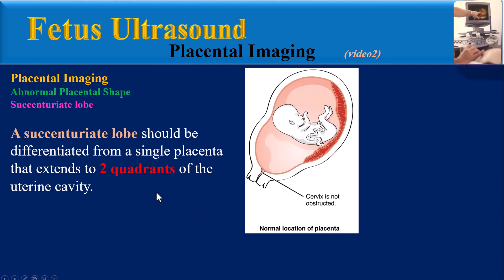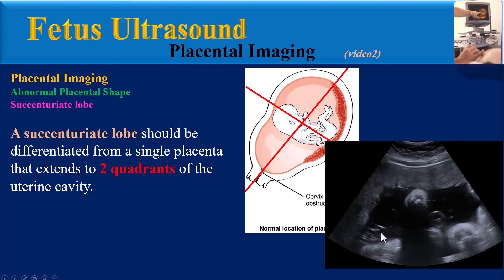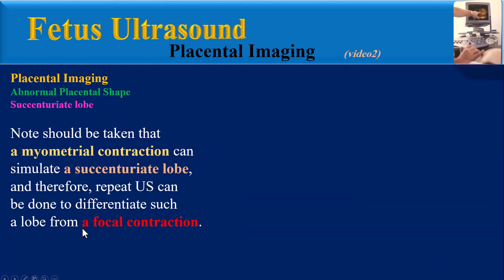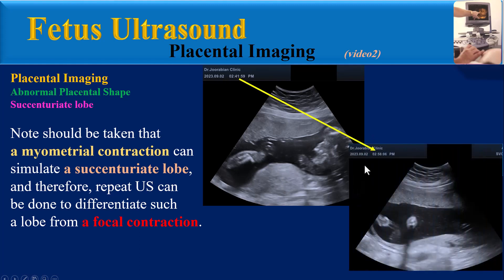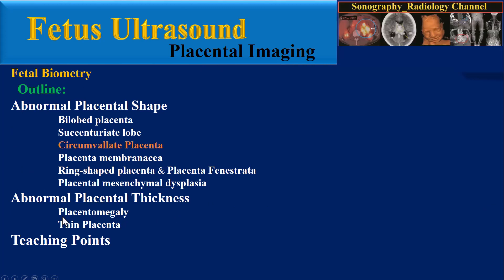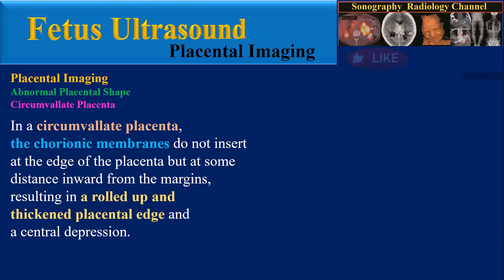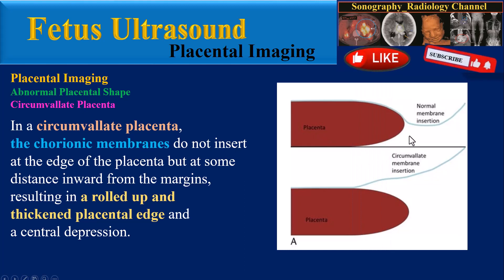A succenturiate lobe should be differentiated from a single placenta that extends to two quadrants of the uterine cavity. Note should be taken that a myometrial contraction can simulate a succenturiate lobe, and therefore repeat ultrasound can be done to differentiate such a lobe from a focal contraction. In this ultrasound image the main placenta can be seen anteriorly and a structure similar to placenta can also be seen, but after about 15 minutes that structure disappears, confirming it was a focal contraction.